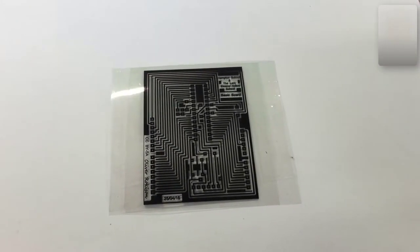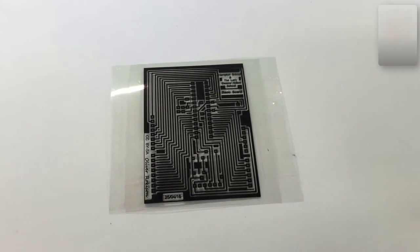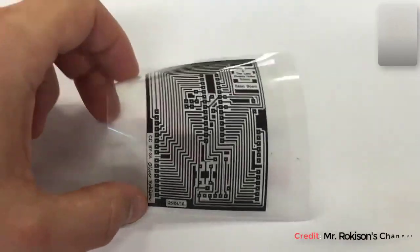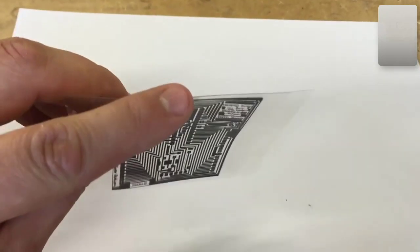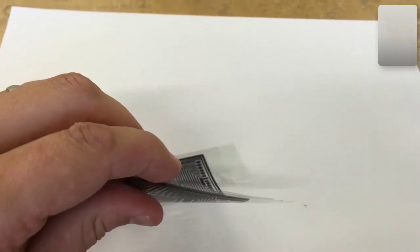The first step in manufacturing a PCB is to print out your design onto a sheet of acetate. You can see here I printed the design twice on two sheets and then stuck them one on top of the other.